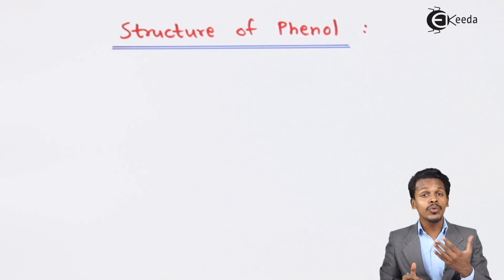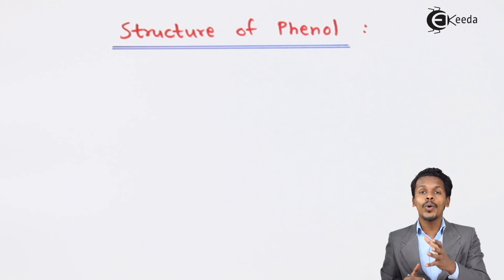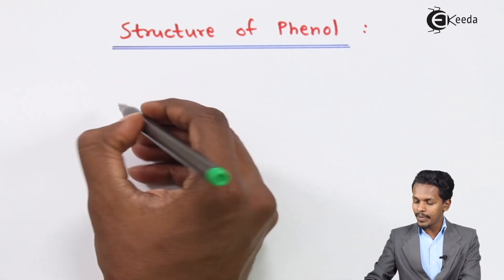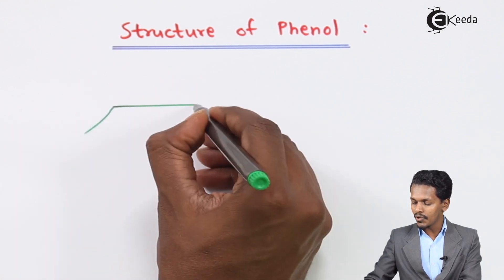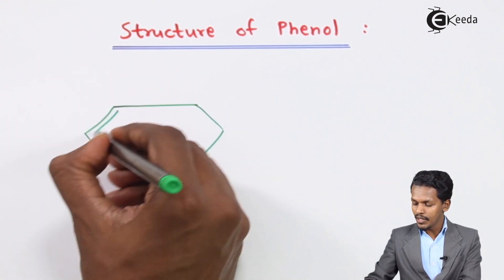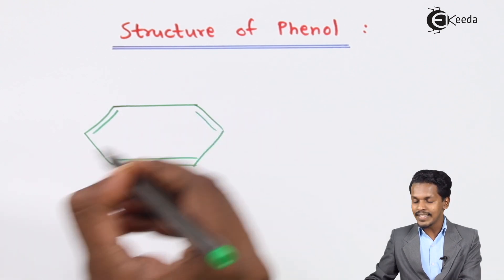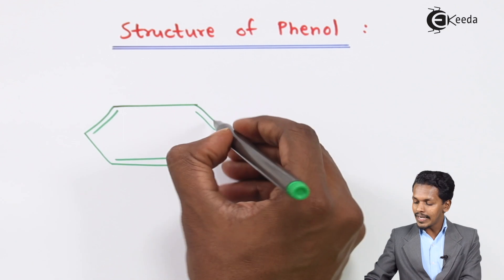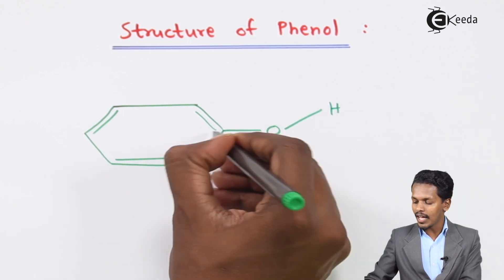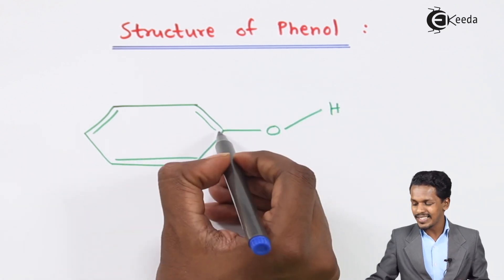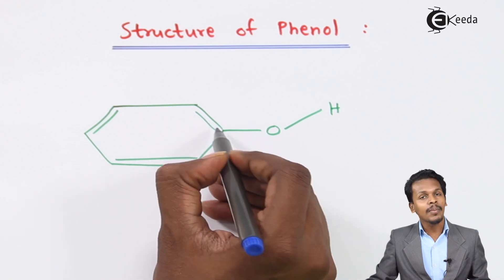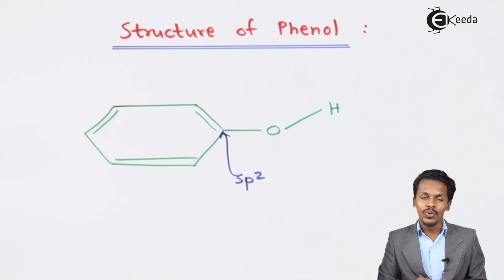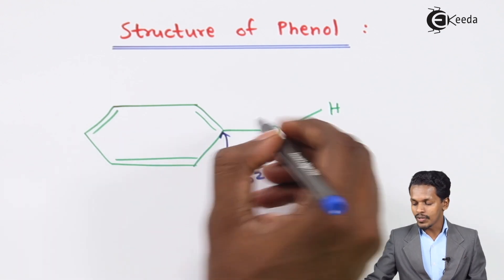In this topic we are going to talk about the structure of phenol. We clearly understand that the OH group is attached to the carbon atom of an aromatic ring. For example, considering phenol which consists of a benzene ring — in the benzene ring there is an alternating carbon-carbon double bond as well as carbon-carbon single bond. That is the reason the OH is attached to the carbon atom here, and this carbon is sp2 hybridized.